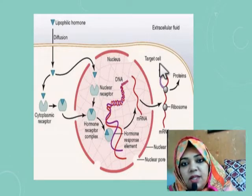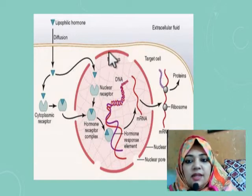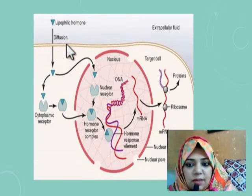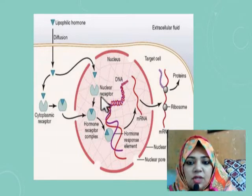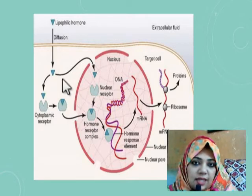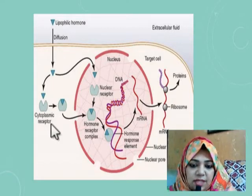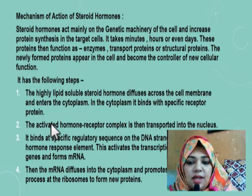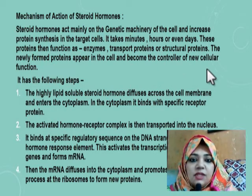So once steroid hormones are synthesized they enter the blood, are carried by plasma proteins, and when they reach their target cell they diffuse across the cell membrane and show their action. Regarding the nuclear receptor shown in the diagram — you don't have to draw that when writing your answer; you can omit it and just start with the cytoplasmic receptor.